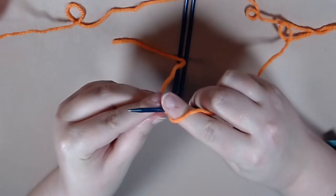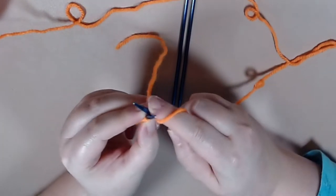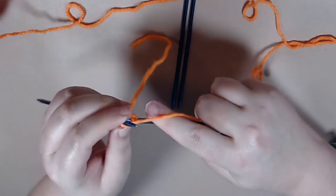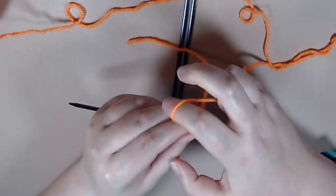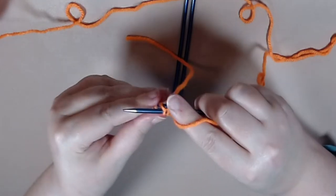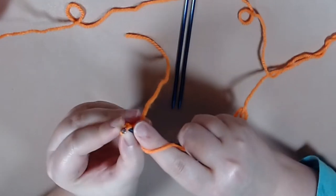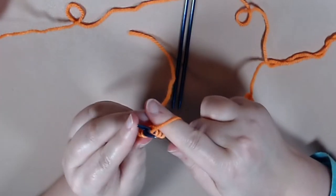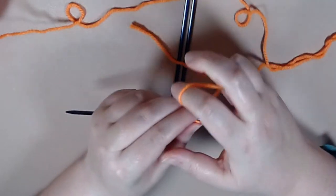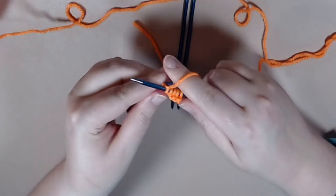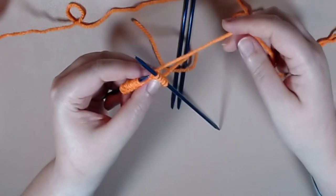So what we're going to do is we are going to knit five stitches onto our first double pointed needle. All right, we have five there.